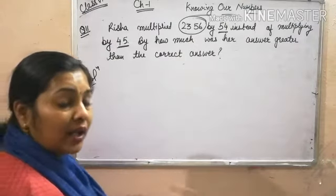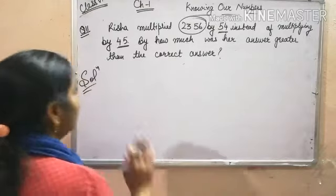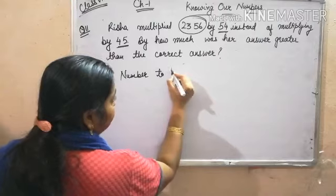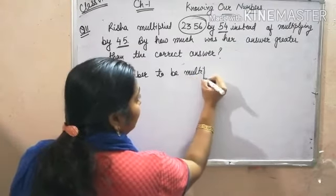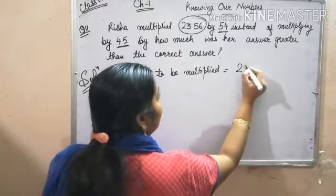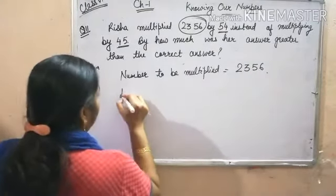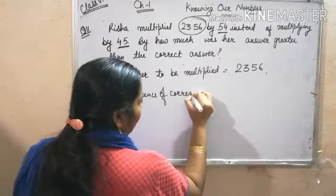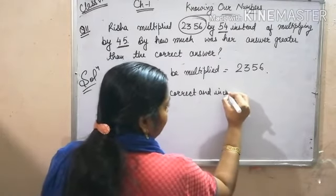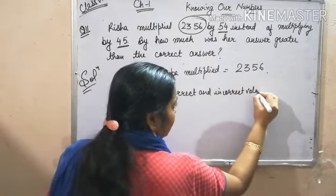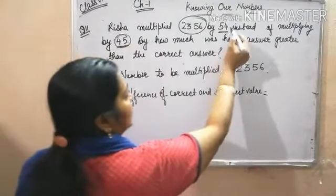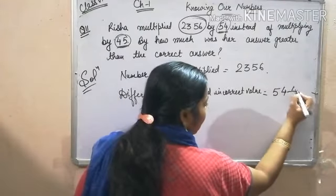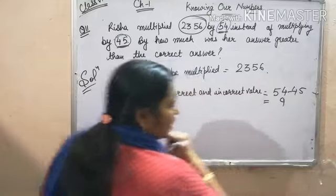But I will tell you another method which is easier. The number to be multiplied is 2356. Find the difference of the correct and incorrect value. The correct value is 45 and the incorrect value is 54. Their difference is 54 minus 45, which equals 9.